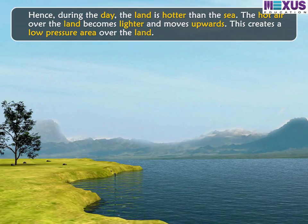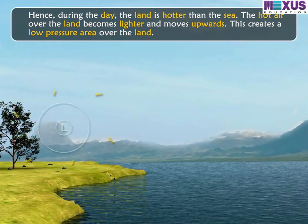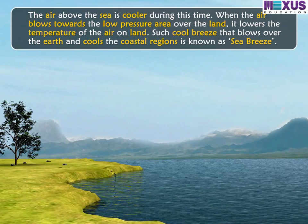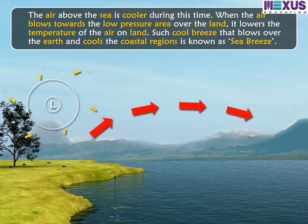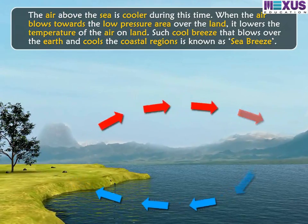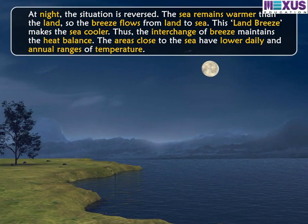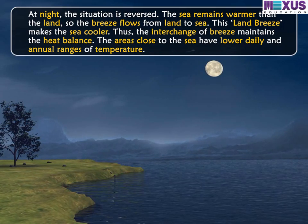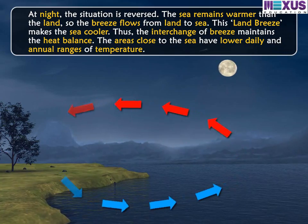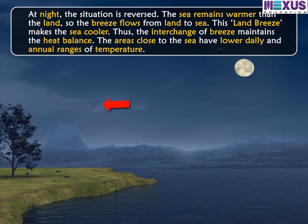During the day, the land is hotter than the sea. The hot air over land becomes lighter and moves upwards, creating a low-pressure area over the land. The air above the sea is cooler, and when it blows towards the low-pressure area over land, it lowers the temperature of the air on land. Such a cool breeze that blows from the sea and cools coastal regions is known as sea breeze. At night, the situation is reversed — the sea remains warmer than the land, so the breeze flows from land to sea. This land breeze makes the sea cooler. The interchange of breeze maintains the heat balance, and areas close to the sea have lower daily and annual ranges of temperature.